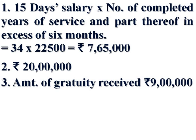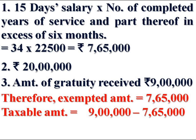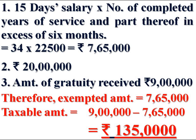These are the 3 points under Section 10(10) for the computation of Exempted Gratuity. The least of these 3 points is exempt from tax. First point Rs. 7,65,000, second point Rs. 20,00,000, third point Rs. 9,00,000. The least amount is Rs. 7,65,000. Therefore, Exempted amount is equal to Rs. 7,65,000. Taxable amount equals amount received Rs. 9,00,000 minus Exempted amount Rs. 7,65,000, that is equal to Rs. 1,35,000.